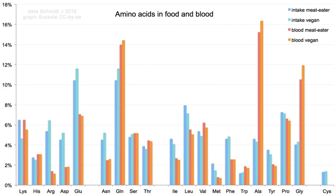This pH is known as the isoelectric point, pI, defined as pI = ½(pKa1 + pKa2). The individual amino acids all have slightly different pKa values, so have different isoelectric points. For amino acids with charged side chains, the pKa of the side chain is involved.